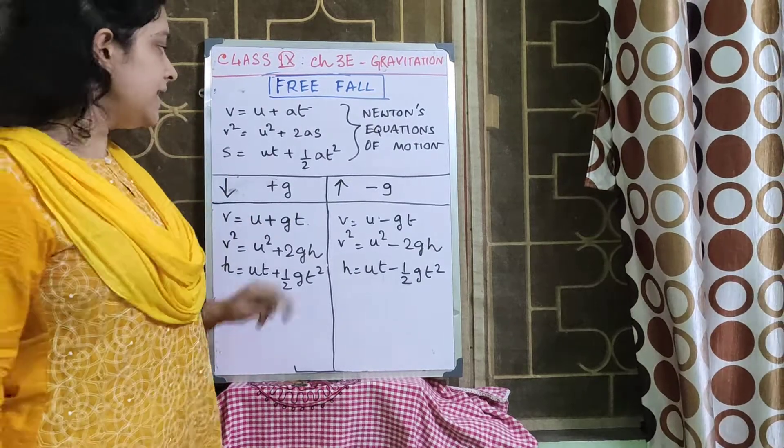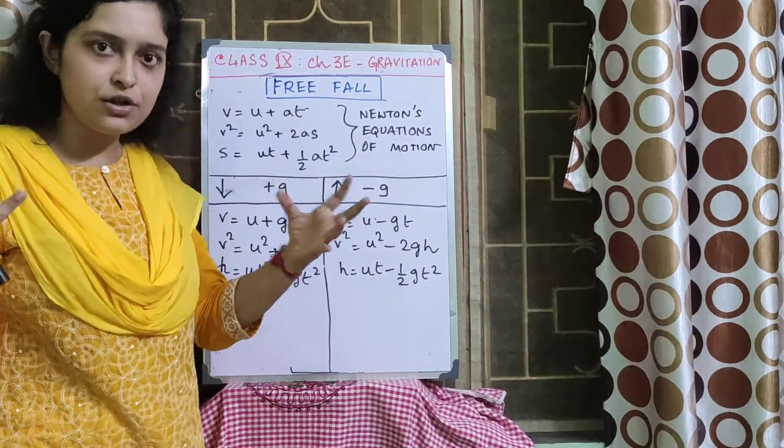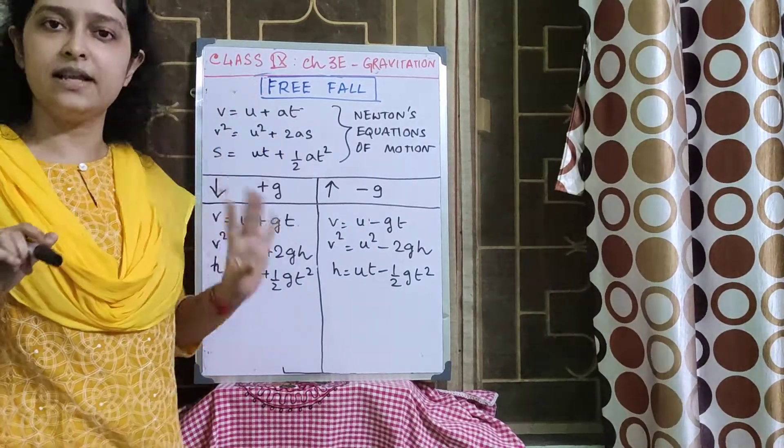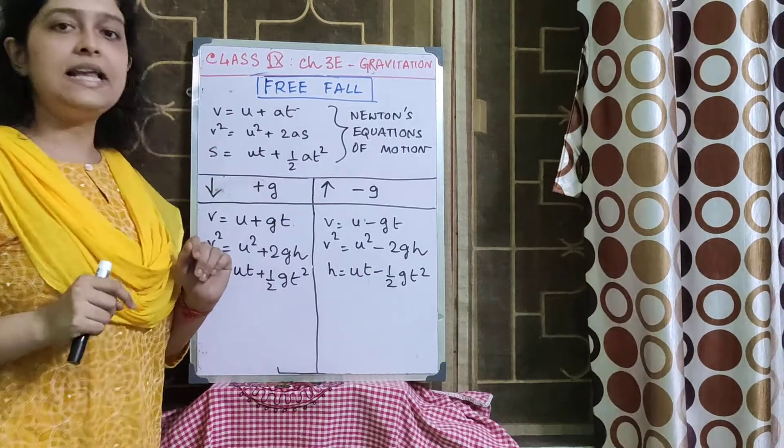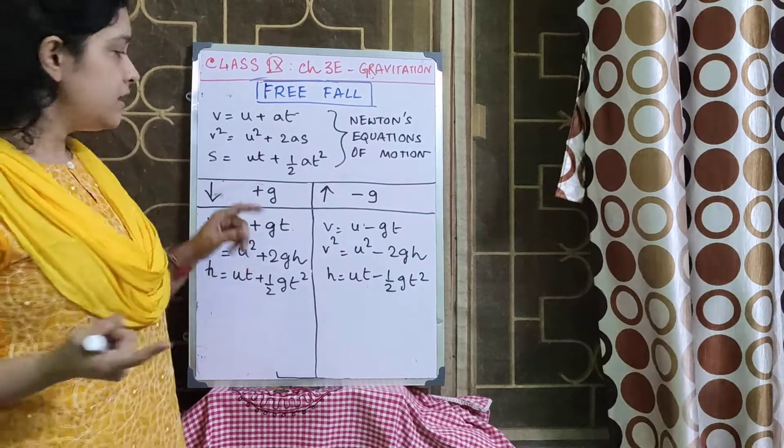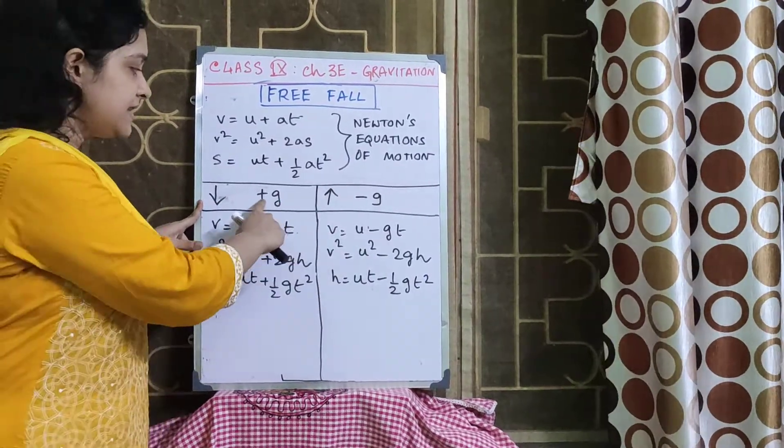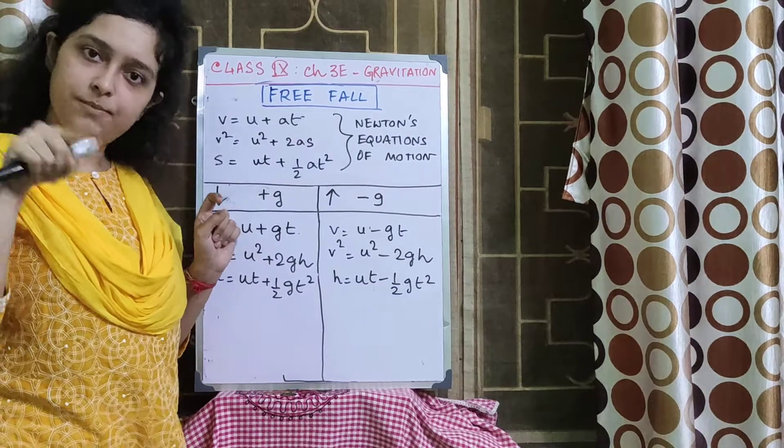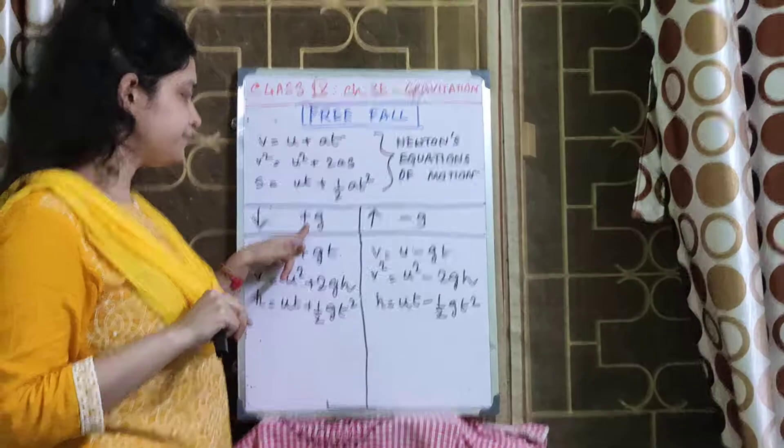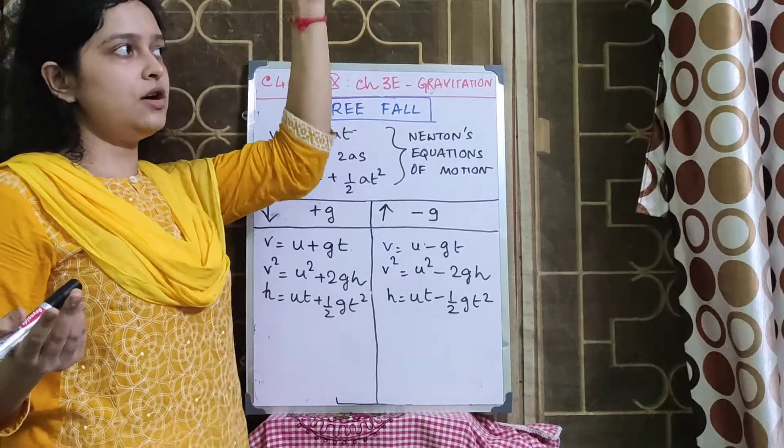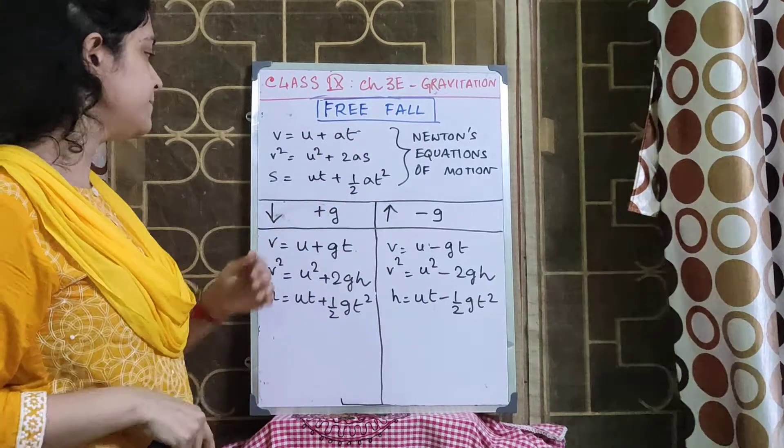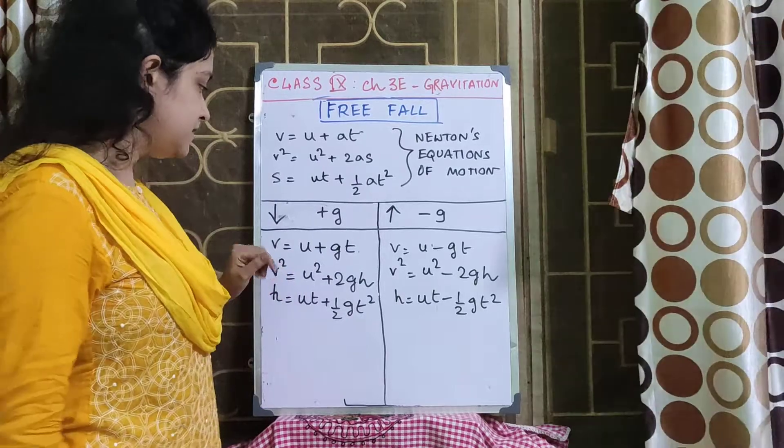We have already studied about this. And by the concept free fall, we mean that when a body falls freely under the force of gravity, considering that no air friction is acting on the body which is falling. Now let's see how these equations of motion change when we apply free fall to a body. When it falls freely under gravity, acceleration is the acceleration due to gravity. When a body falls down, G is taken as plus. When a body is falling down, G is plus, because the velocity is increasing, rate of increase in velocity.